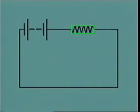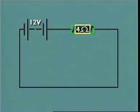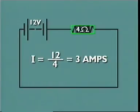Battery voltage can be measured: 12 volts. The value of the resistor is on its casing: 4 ohms. Current then equals voltage, 12 volts, divided by resistance, 4 ohms, equals 3 amperes of current flows through every point in the circuit.